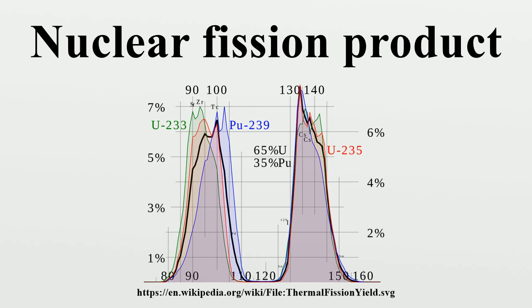The yield is somewhat dependent on the parent atom and also on the energy of the initiating neutron. In general, the higher the energy of the state that undergoes nuclear fission, the more likely that the two fission products have similar mass. Hence as the neutron energy increases and/or the energy of the fissile atom increases, the valley between the two peaks becomes more shallow.